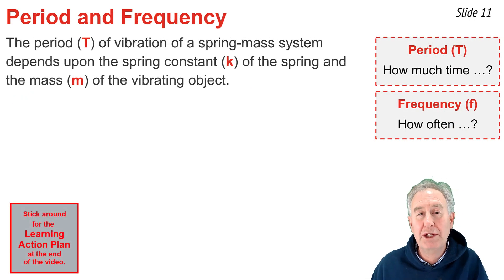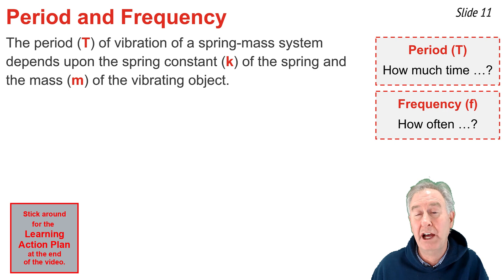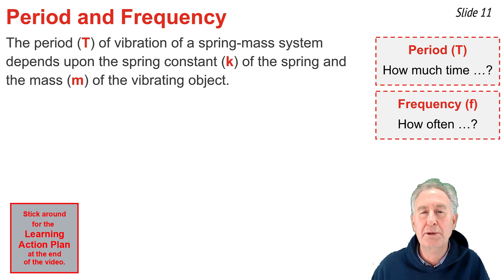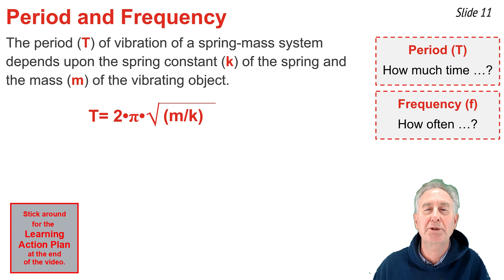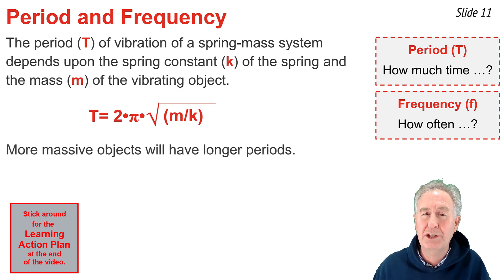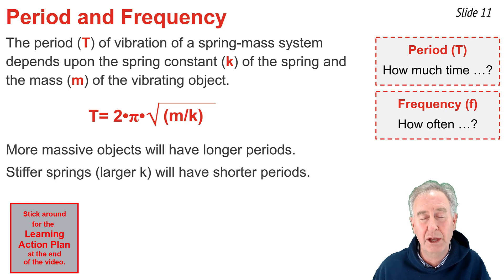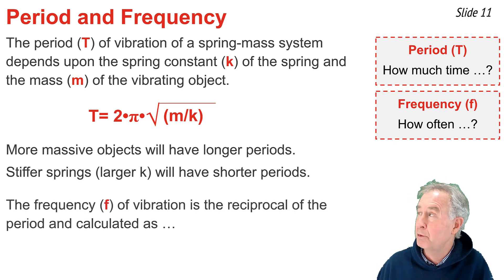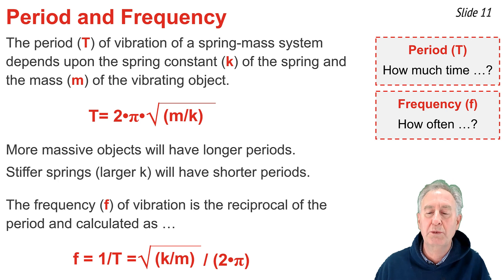The period of vibration indicates how much time it takes the mass-spring system to complete its back-and-forth cycle, whereas the frequency refers to how often that system completes its vibration. The period of a mass-spring system depends on the spring constant and the mass of the vibrating object: T = 2π√(m/k). More massive objects have longer periods, while a stiffer spring with a larger k has a shorter period. The frequency is the reciprocal of the period: f = √(k/m) / (2π).